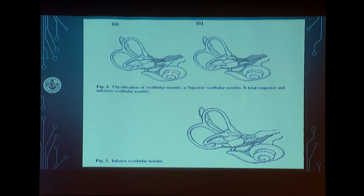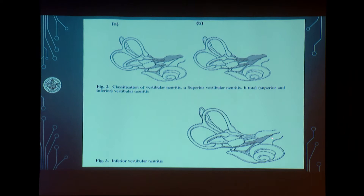Vestibular neuritis can be three types: superior vestibular nerve neuritis (approximately 90% of cases), inferior vestibular nerve neuritis, or mixed neuritis involving both nerves (~10% combined). Using oVEMP alone identifies superior vestibular nerve neuritis, but combining cVEMP and oVEMP allows identification of both superior and inferior vestibular nerve involvement.